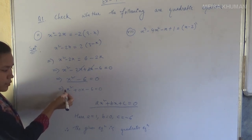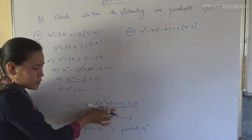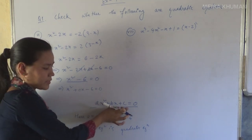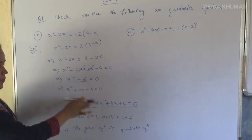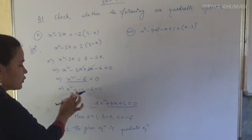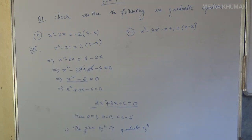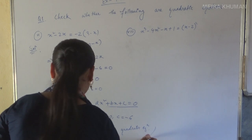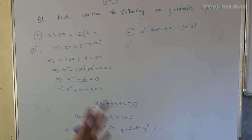Since the coefficient of x² is non-zero, this is in the form ax² + bx + c = 0 — where b and c may be 0. Here b = 0, so this is your quadratic equation. Therefore, the given equation is a quadratic equation.